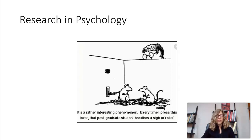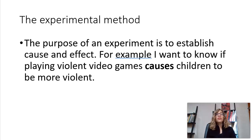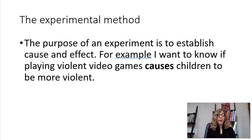This is the first video in a brief video series on research in the field of psychology. We're going to begin by talking about the experimental method. The purpose of an experiment is basically to establish cause and effect — I want to know if one thing causes another. For example, does playing violent video games cause children to be more violent? Does eating sugar cause children to be hyper? Does a medication cause schizophrenia to go away?